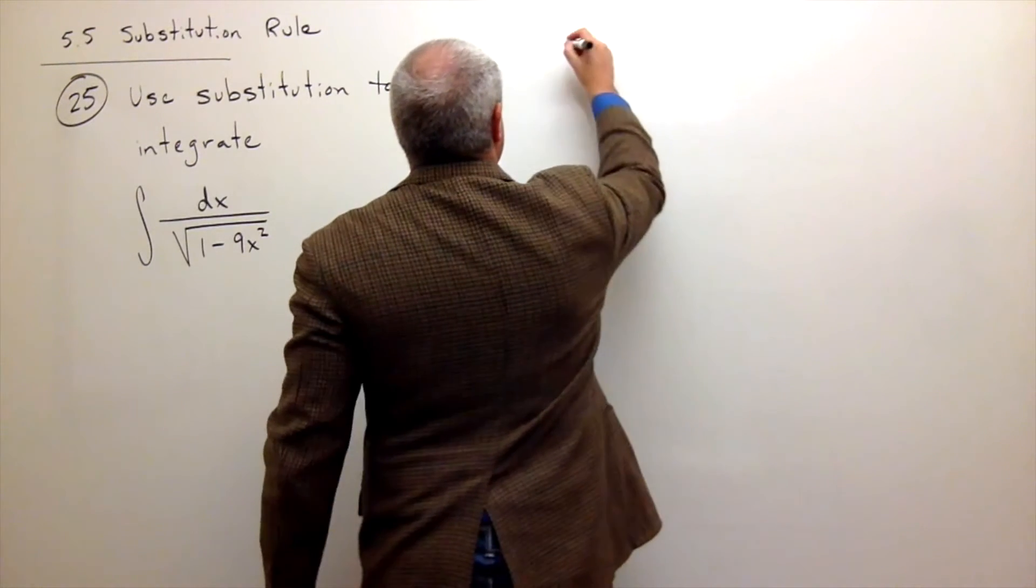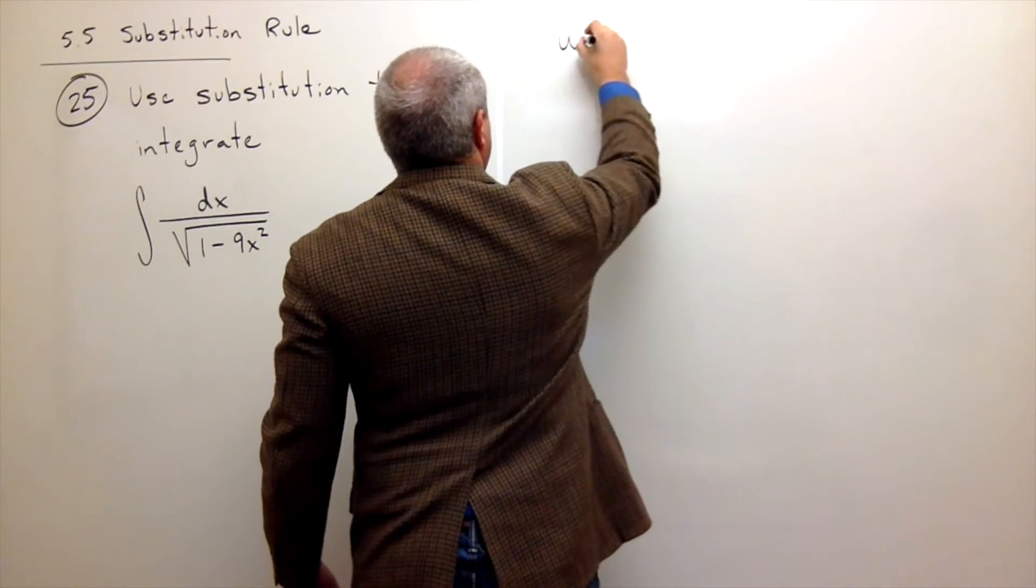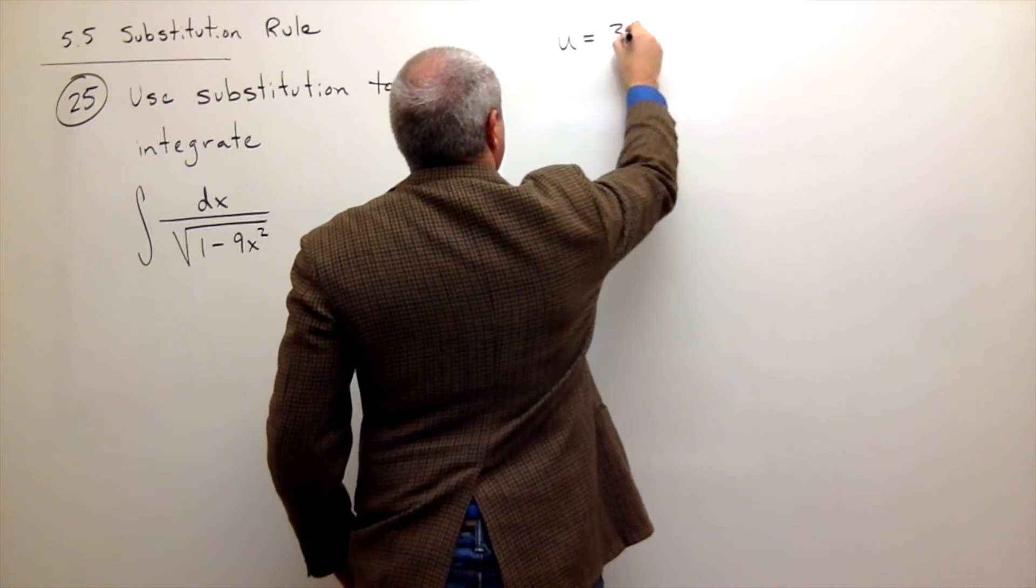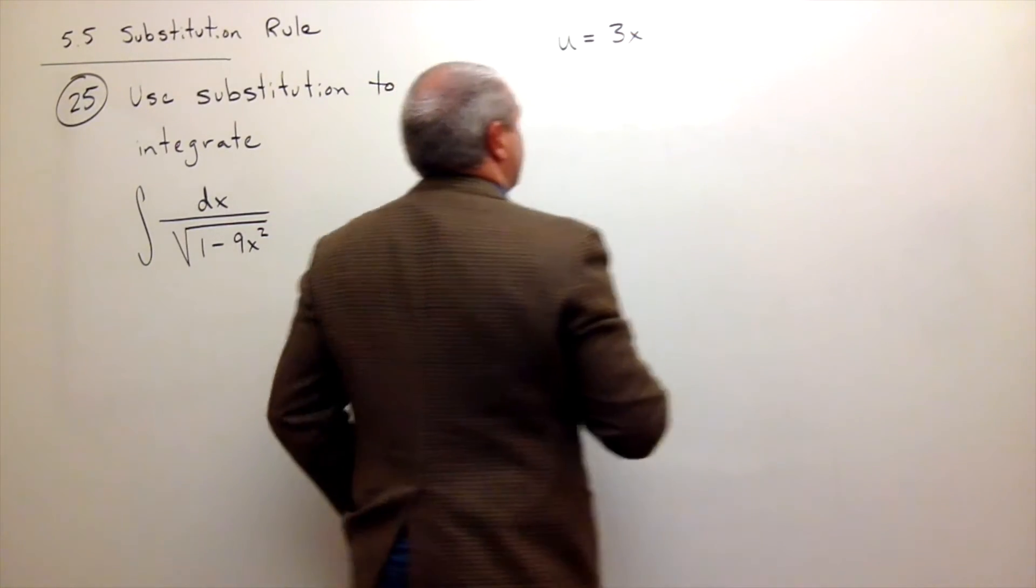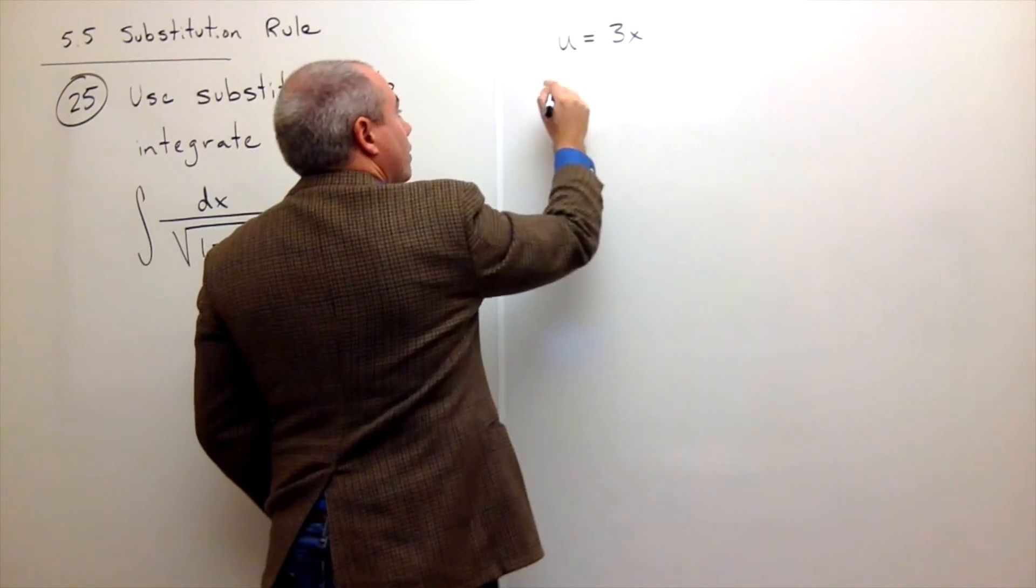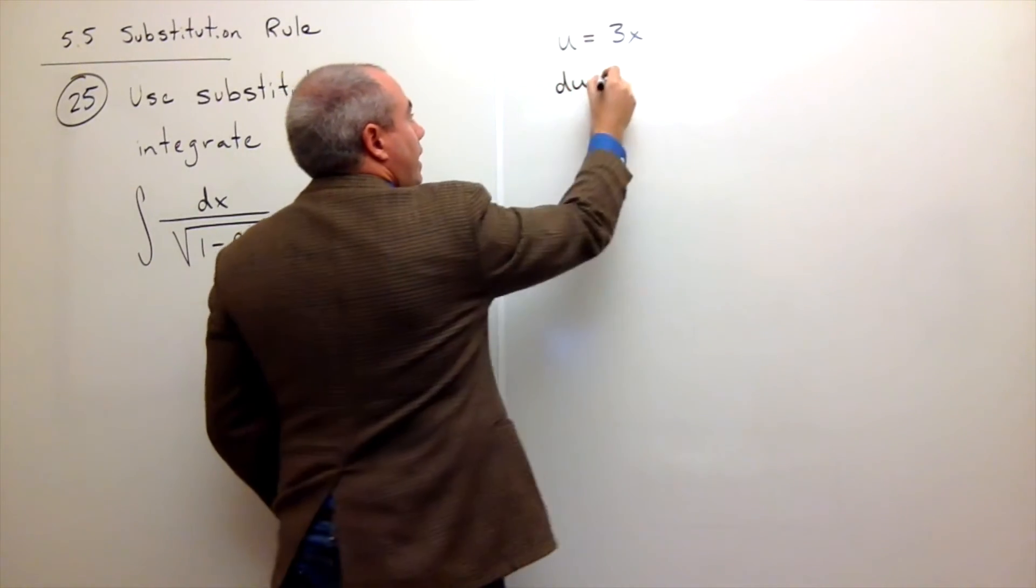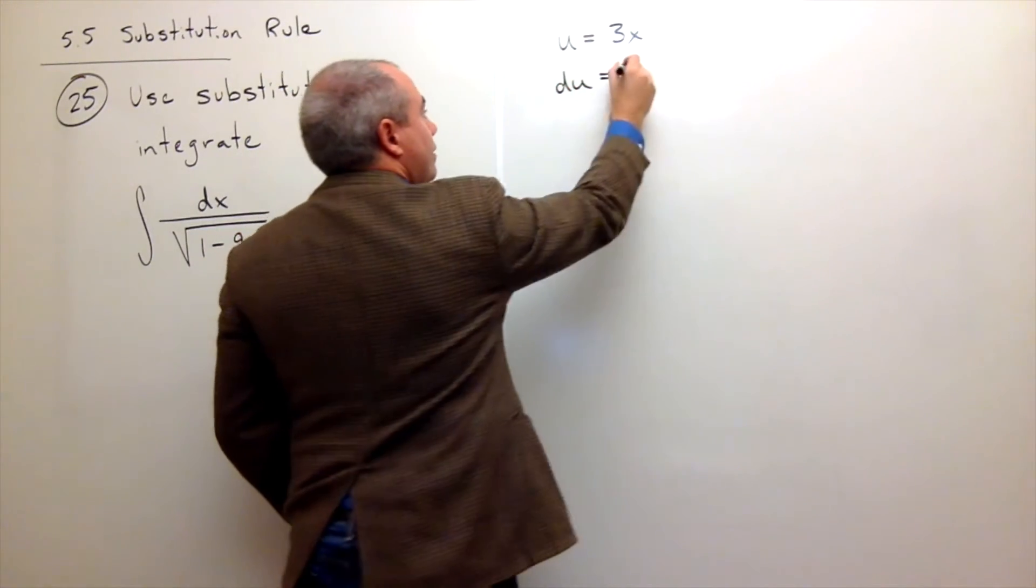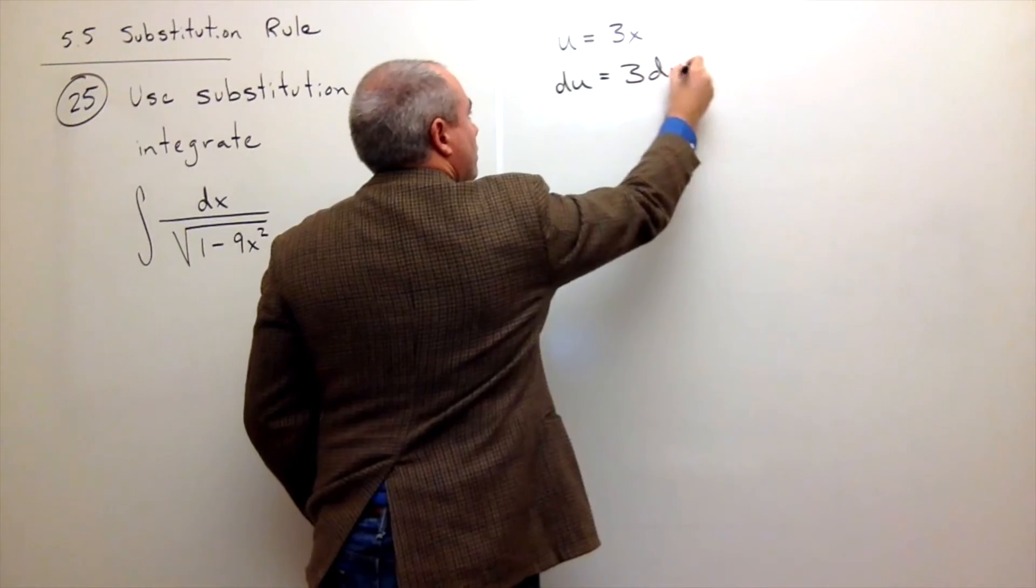So what I'm going to do is I'm going to make a u substitution, and I'm going to u substitute for 3x. If I do, then I get a du, and in this case, the du would be 3 dx.